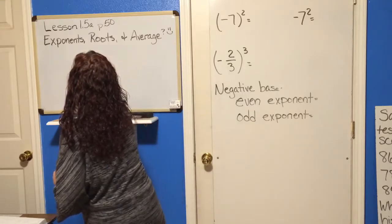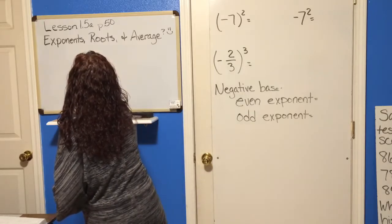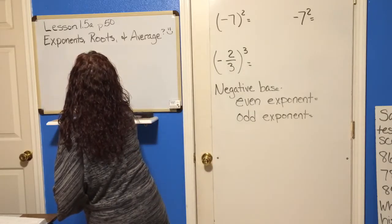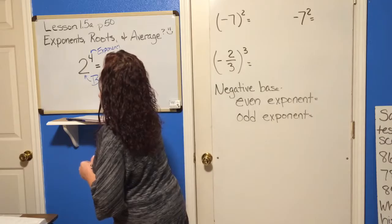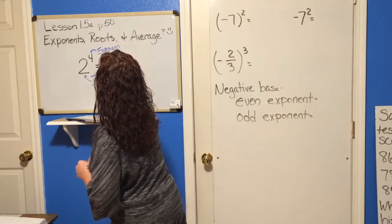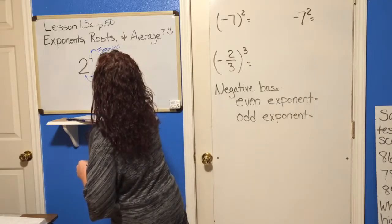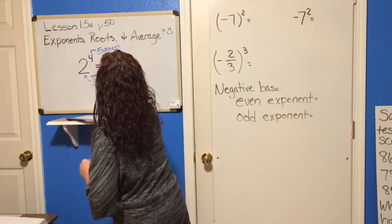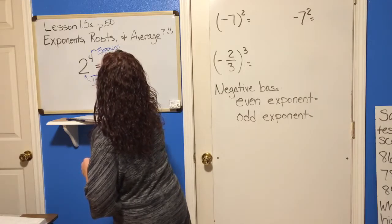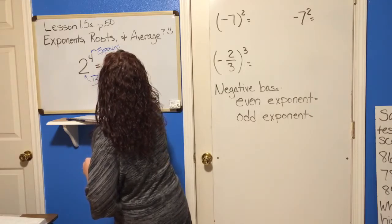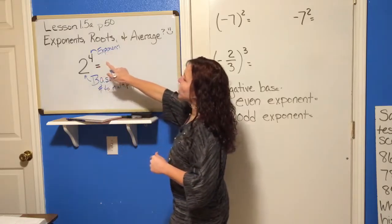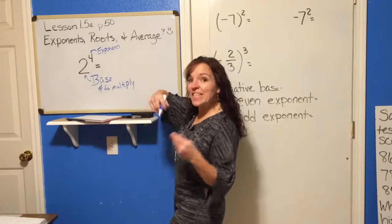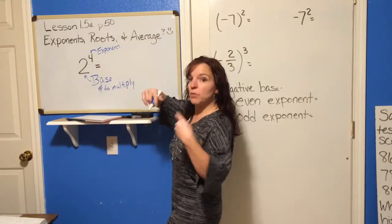We're going to do the first half of section 5 this time, and that is on exponents and roots, and then we're going to skip and do averages. I have a question mark because I'm not sure why that's in this section, but it is, so we'll cover it.